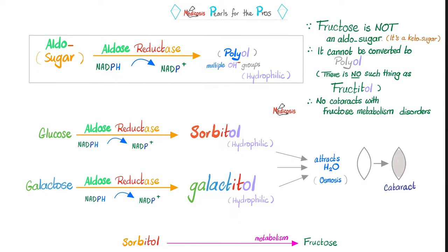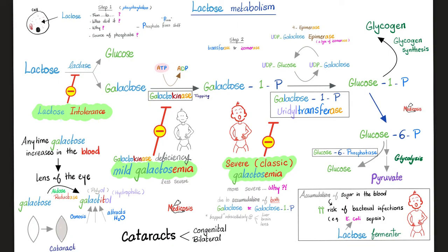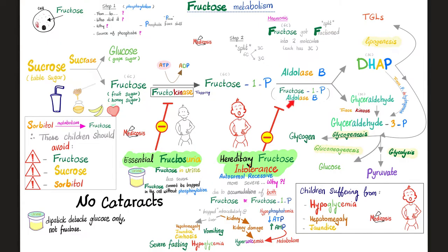The moral of the story: children born with fructosuria do not have cataracts and have milder disease than their galactosemia counterparts. Classic galactosemia is a very severe disease with cataracts. Hereditary fructose intolerance is serious but less severe — no cataracts — and now you know why: fructose is a keto sugar and cannot be acted on by aldose reductase.